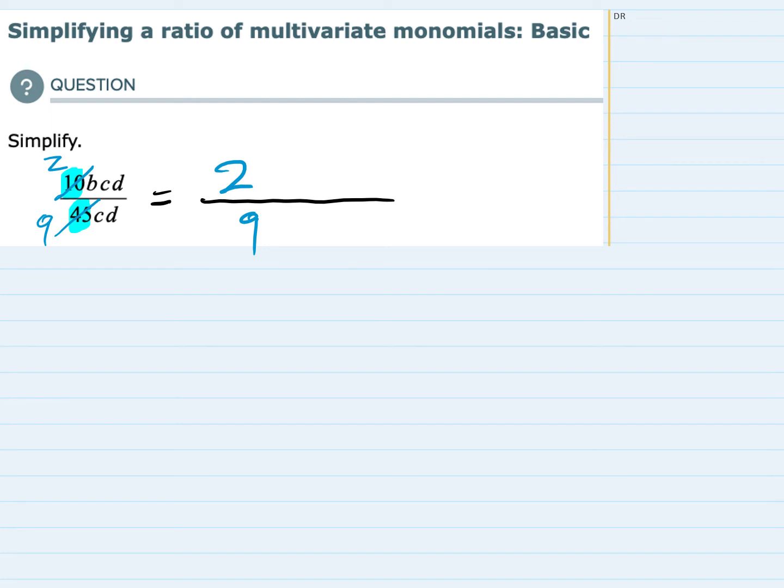Looking at the other variables, I only have one b and it's in the top, it's in the numerator, so there's nothing to simplify there. I just need to make sure that I don't lose it so I'll bring that over, b.